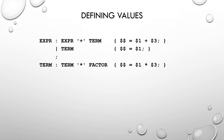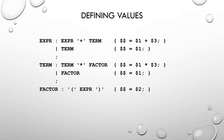For example, term produces term multiplied by factor, then term produces factor — this production rule ends with a semicolon. Factor produces opening parenthesis expression closing parenthesis, where the parentheses are terminal symbols enclosed in single quotes. A factor can also produce an identifier (id) or a number, ending with a semicolon.